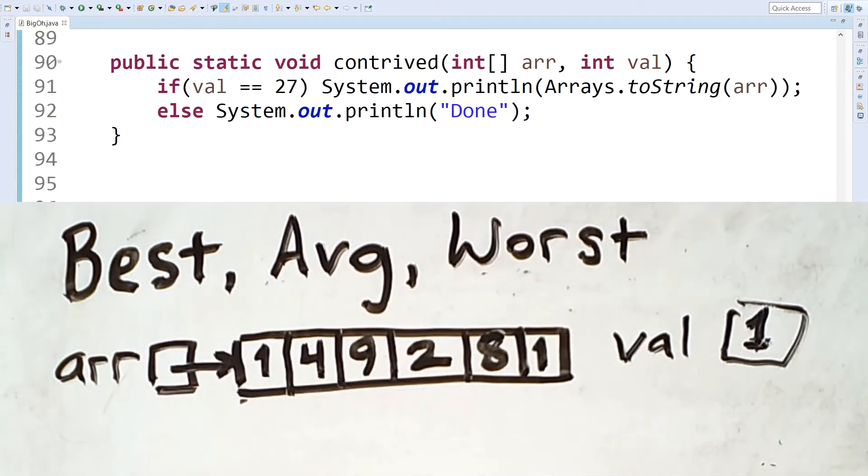Let's consider a somewhat contrived example. Here we have a method that has a case for when value is equal to 27, and a case for everything else. So, in our example, we're sending in a value of 1. In this case, the code would simply print out the string done, which we're treating like an individual statement, and then it would be finished.